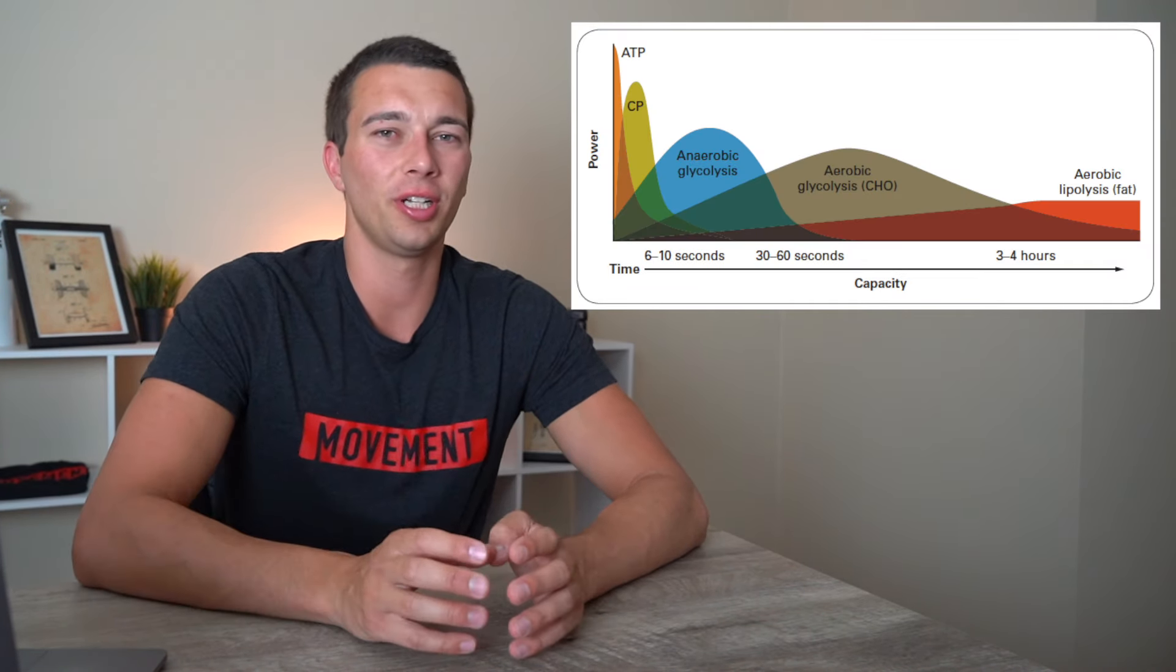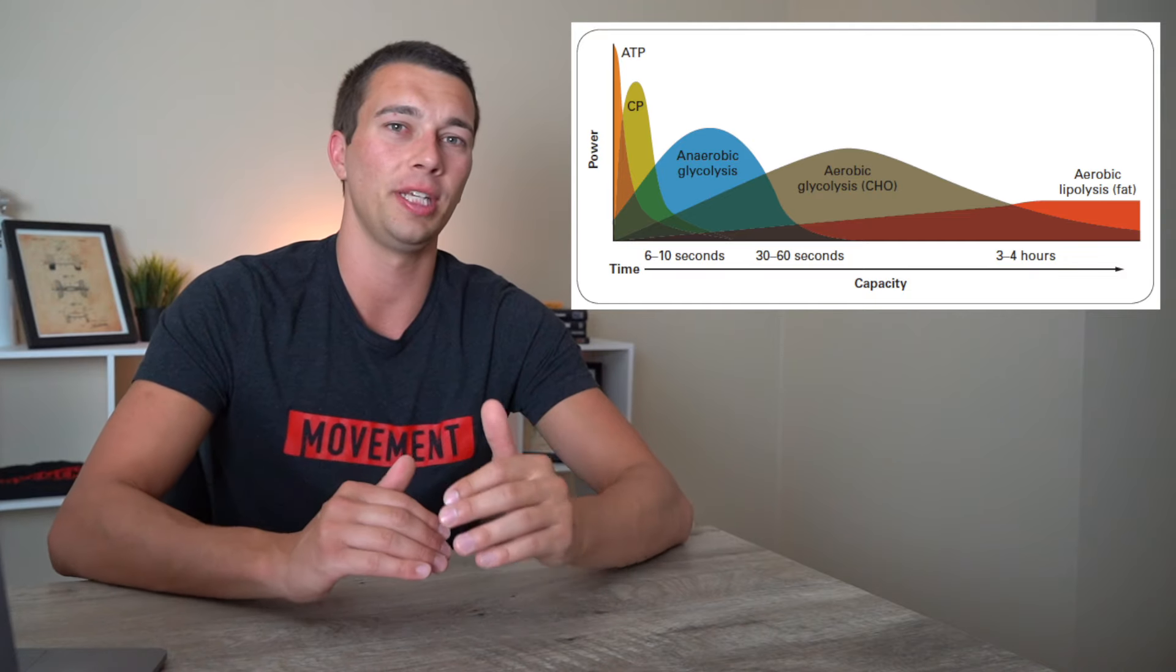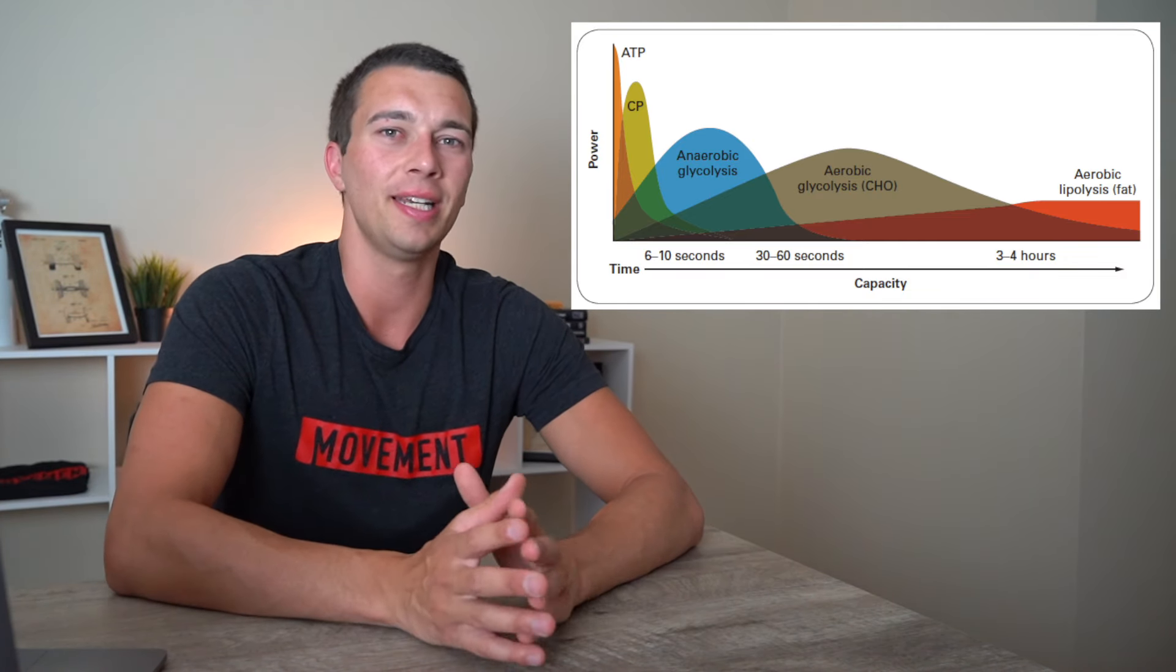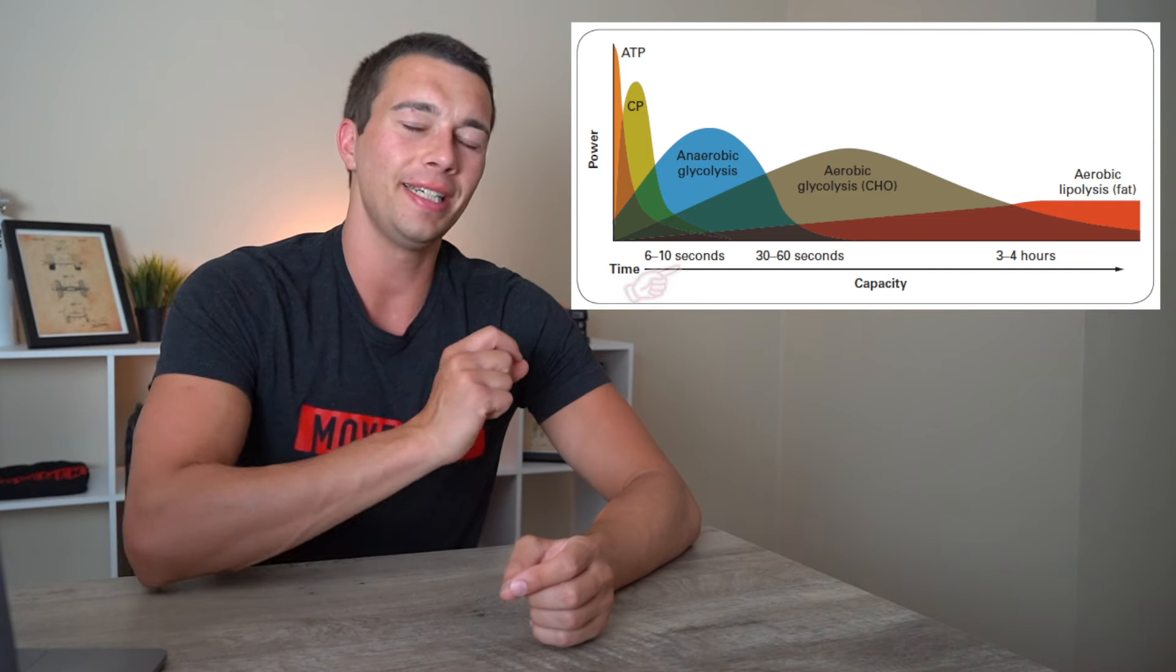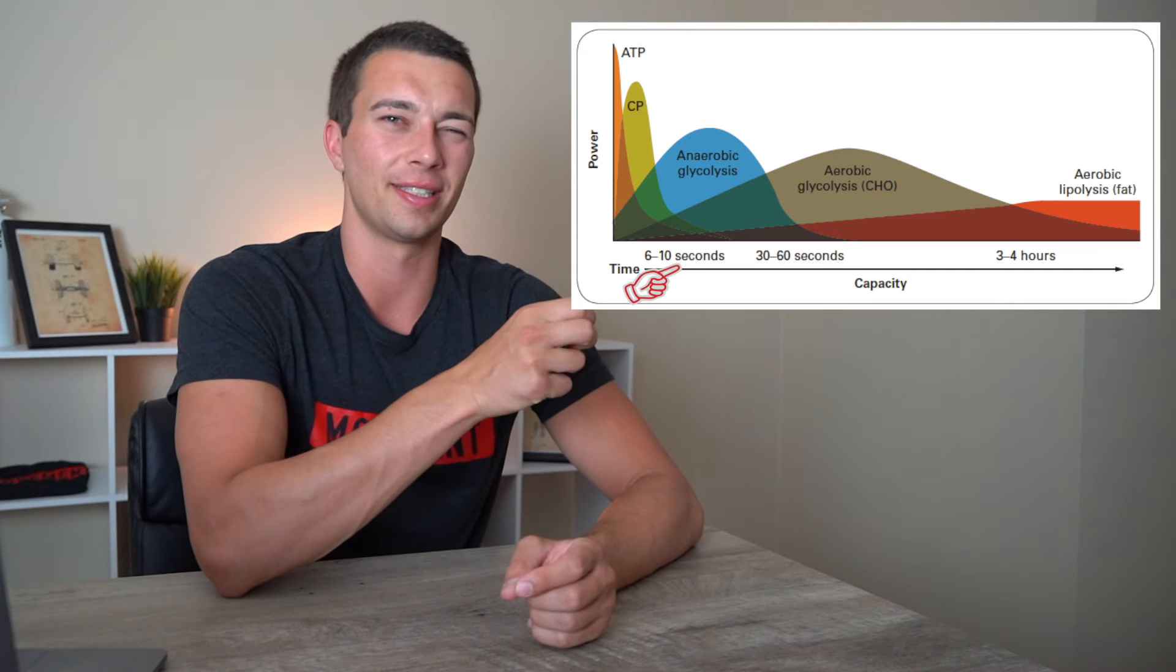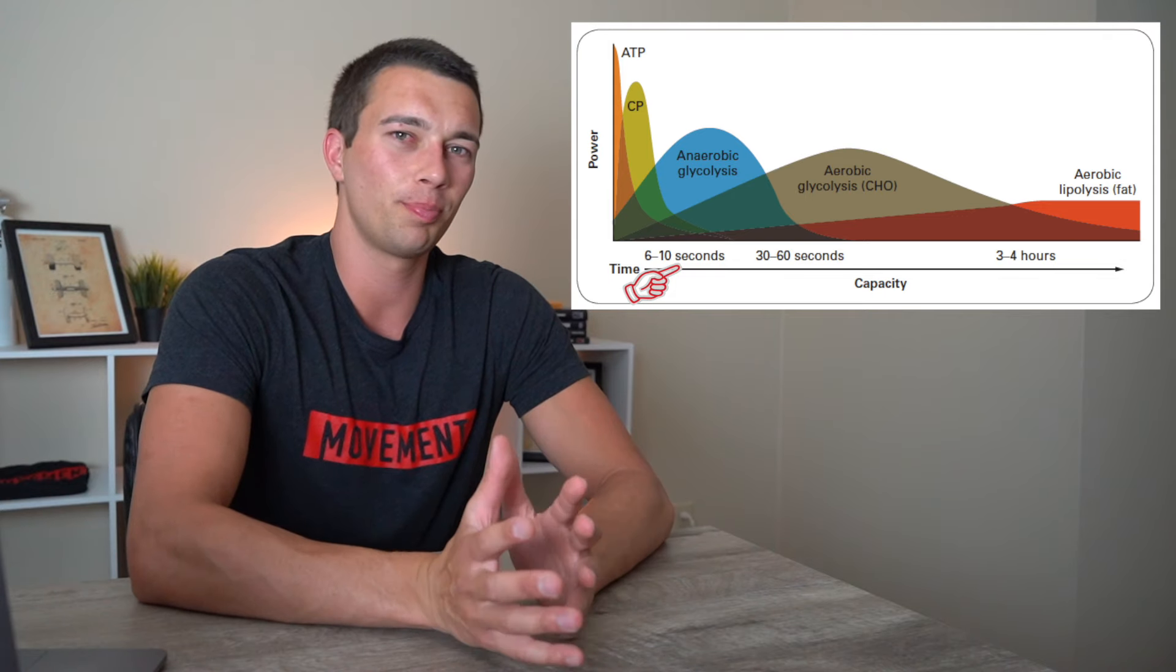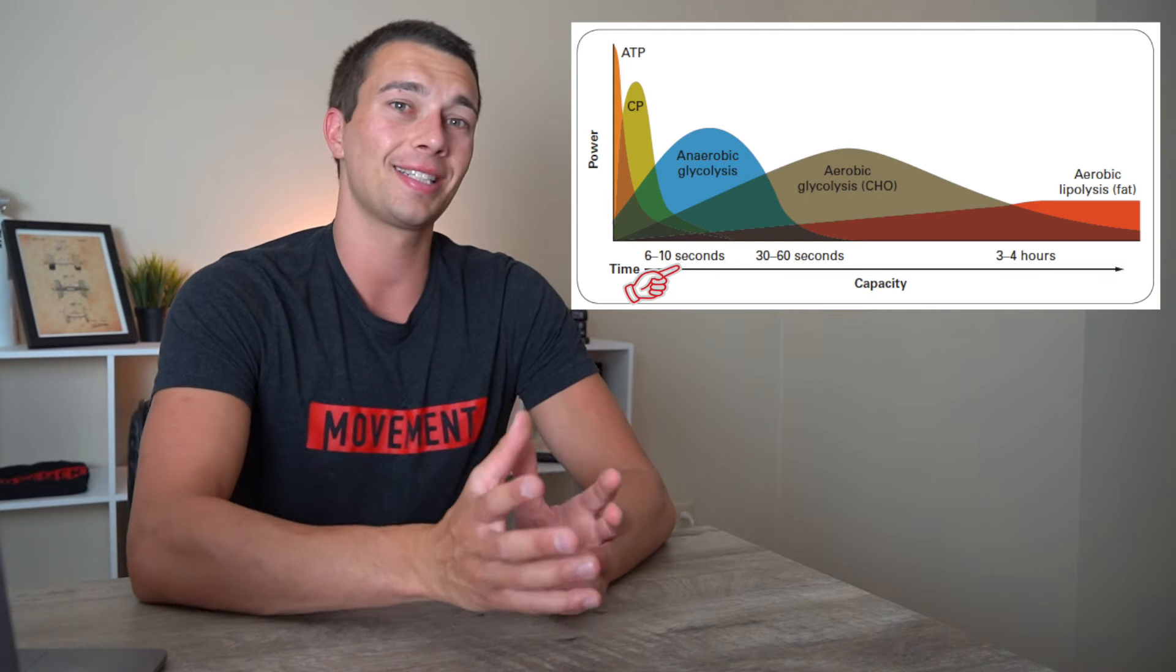We'll start to reference this chart, which will make it a little bit easier to understand the trade-offs or the mixed cases. So for the example of a 100 meter sprint, if we're doing that in 11, 12 seconds, what you can see here is there's going to be a mixture of systems.